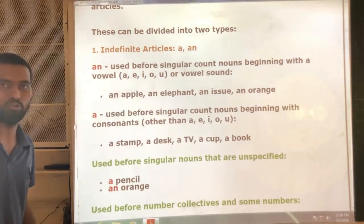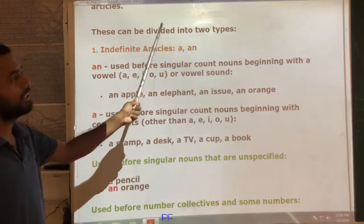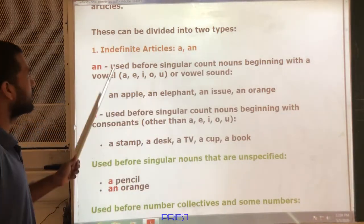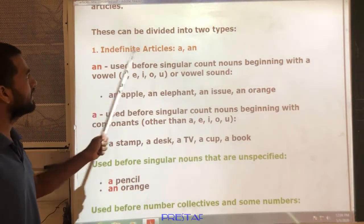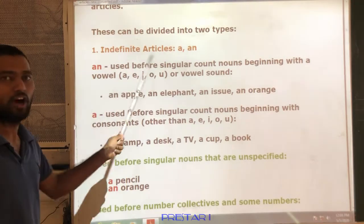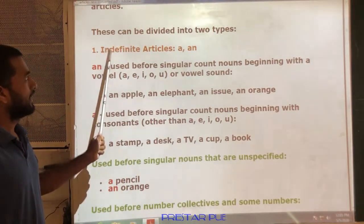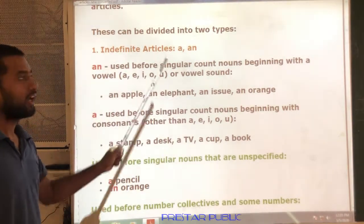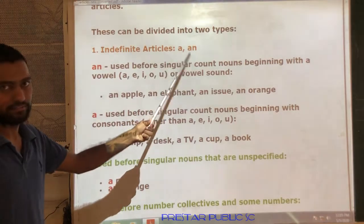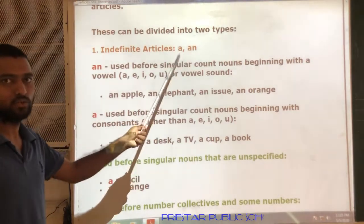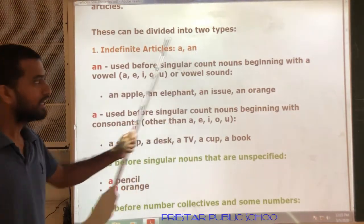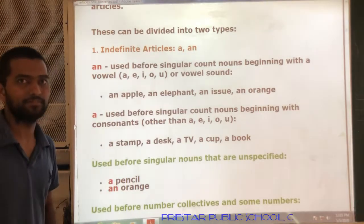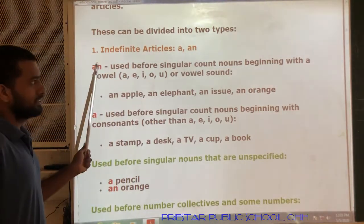These articles can be divided into two types. The first type is indefinite articles. Indefinite articles are 'a' and 'an'. These two articles are considered indefinite articles.